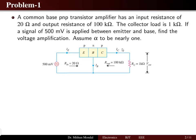The first problem: a BJT in common base PNP transistor amplifier configuration has an input resistance of 20 ohms and output resistance of 100 kilohms. The collector load is 1 kilohm. If a signal of 500 millivolts is applied between the emitter and base, find the voltage amplification. Assume alpha to be nearly 1.